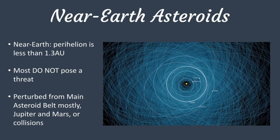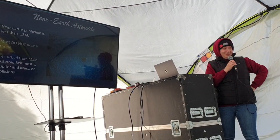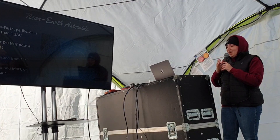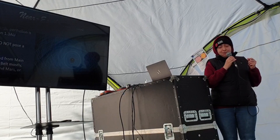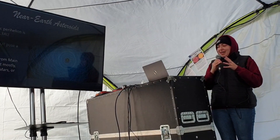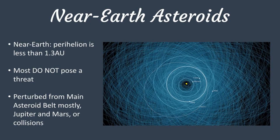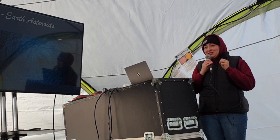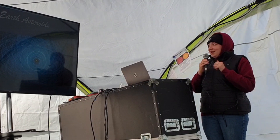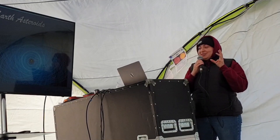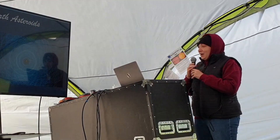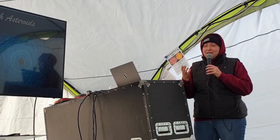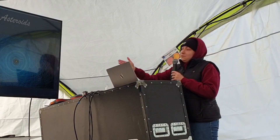The final kind of asteroids to talk about are near-Earth asteroids, because these are the ones we care about — what's coming close to our home planet. A near-Earth asteroid is any one that comes within 1.3 AU of the Sun — so it comes within a third of Earth's orbit around the Sun. It's very important to highlight that most do not pose a threat to us. Most of the near-Earth asteroids originate from the main asteroid belt — they've just been nudged out of there by gravitational influences from Jupiter and also Mars, or by colliding with another asteroid in the main asteroid belt, which can disturb their orbits.